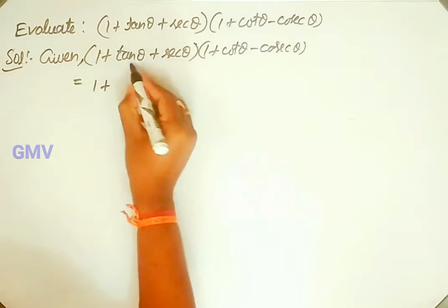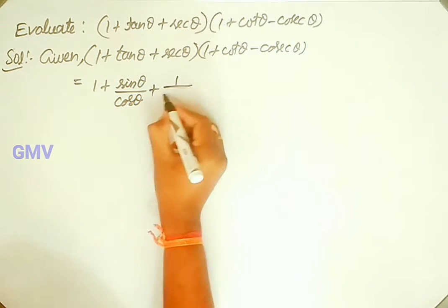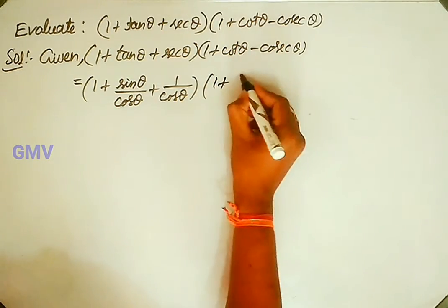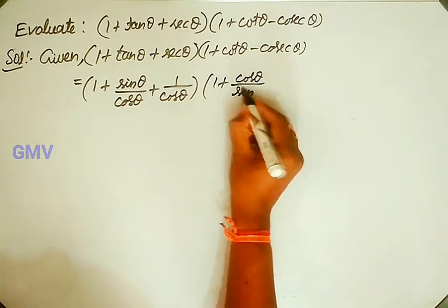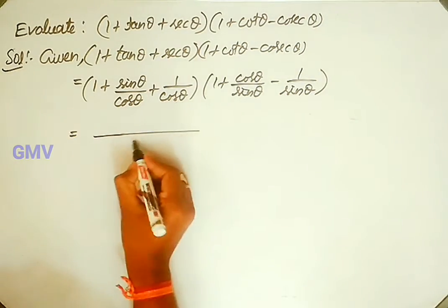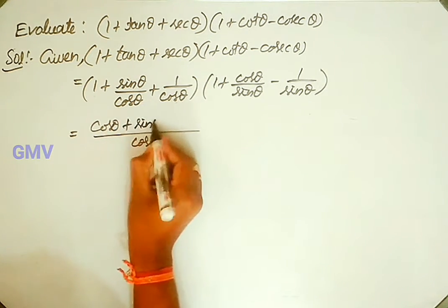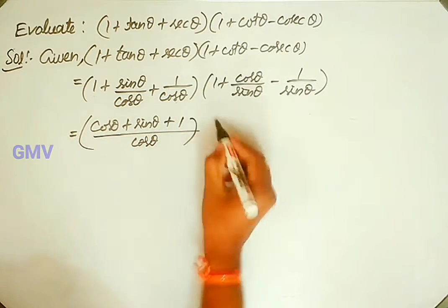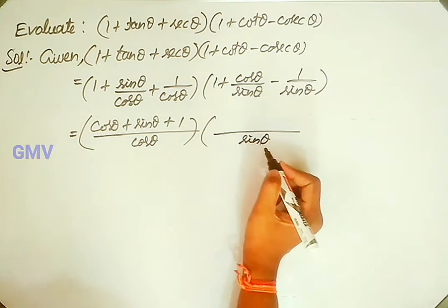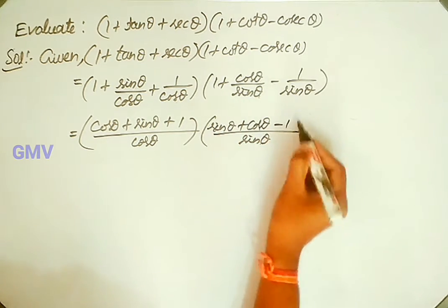I will write this as: 1 plus tan theta written as sin theta over cos theta, plus secant theta written as 1 over cos theta, into 1 plus cot theta written as cos theta over sin theta, minus cosecant theta written as 1 over sin theta. Taking cos theta as common, we get (cos theta plus sin theta plus 1) into (cos theta).